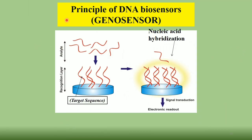The principle of the genosensor or DNA biosensor: the working electrode has single-strand DNA of the pathogenic organism immobilized as the biorecognition element. When a blood sample containing pathogenic bacteria is added, hybridization occurs. There will be a change in current or impedance signal due to nucleic acid hybridization, allowing detection of disease-causing bacteria present in the blood.